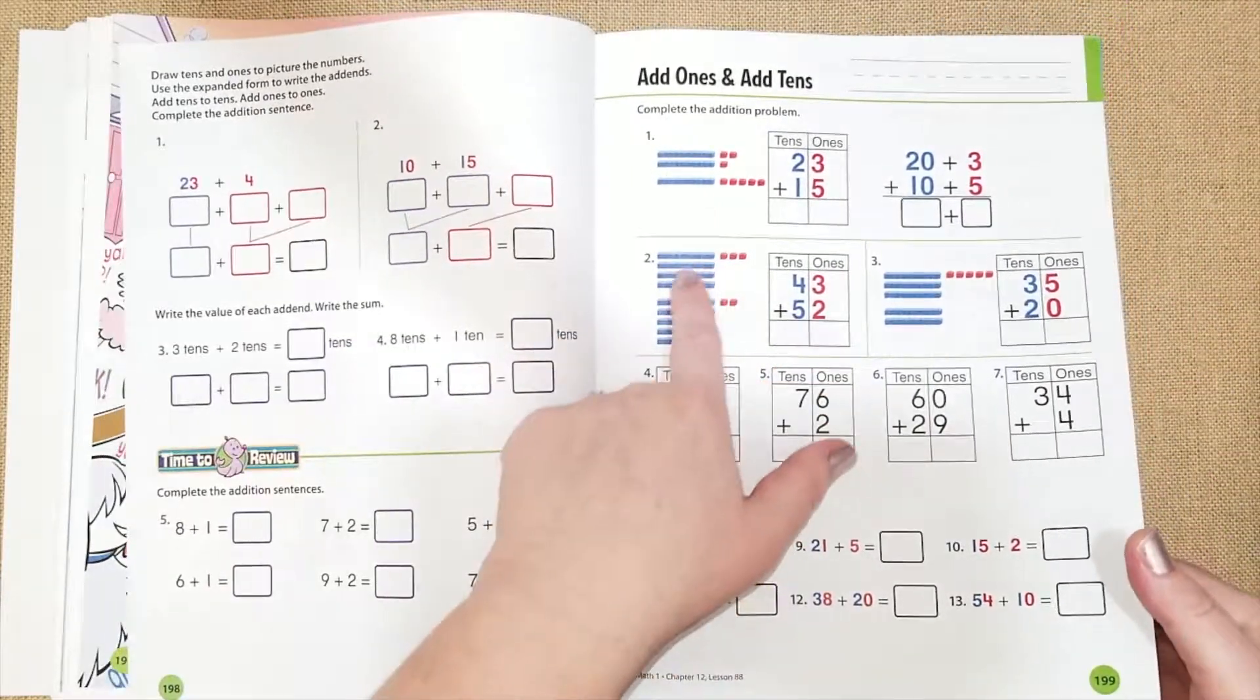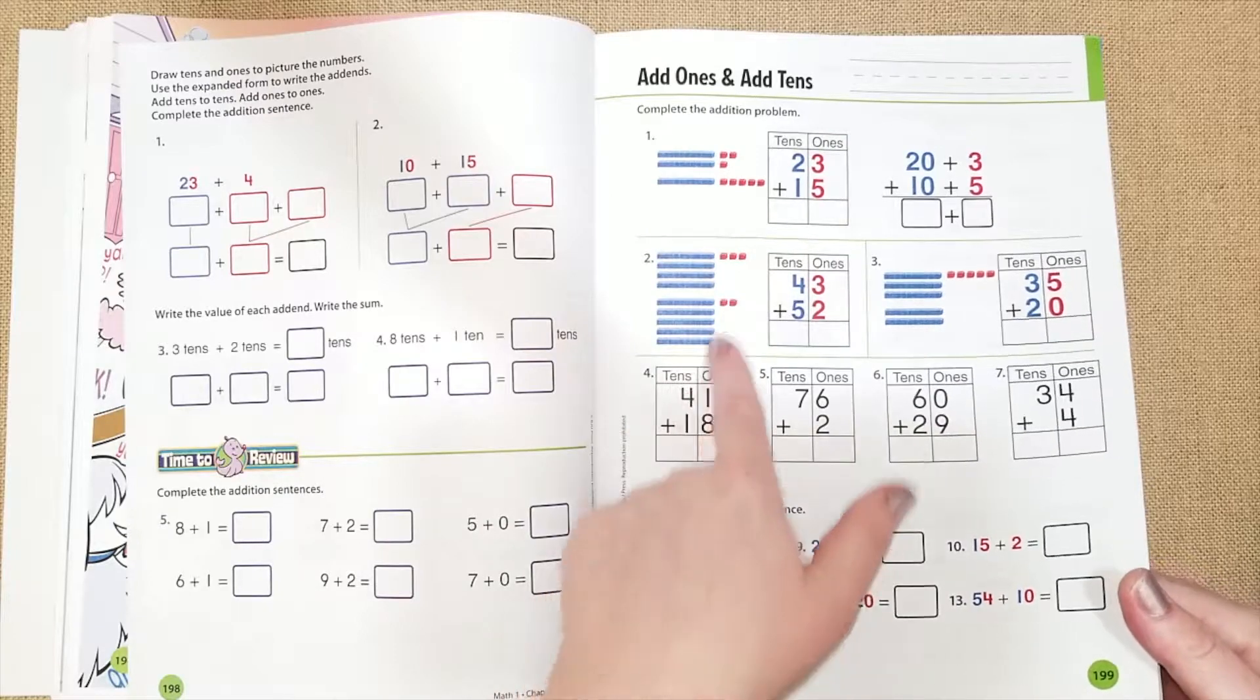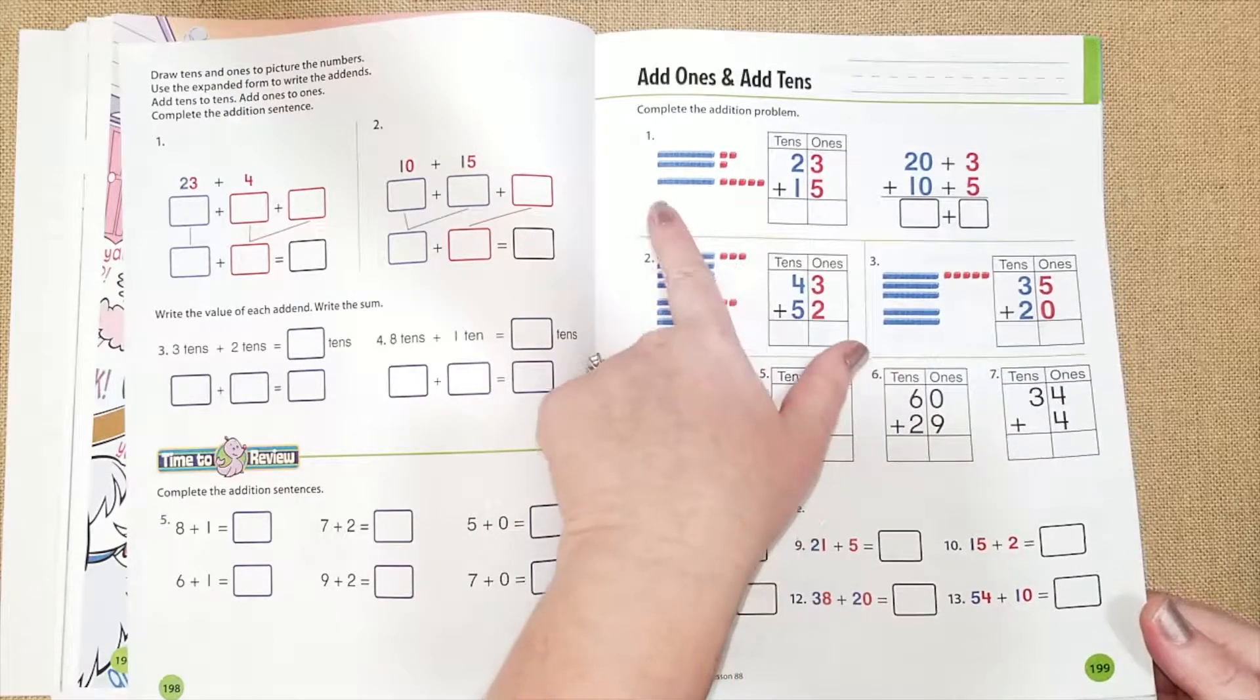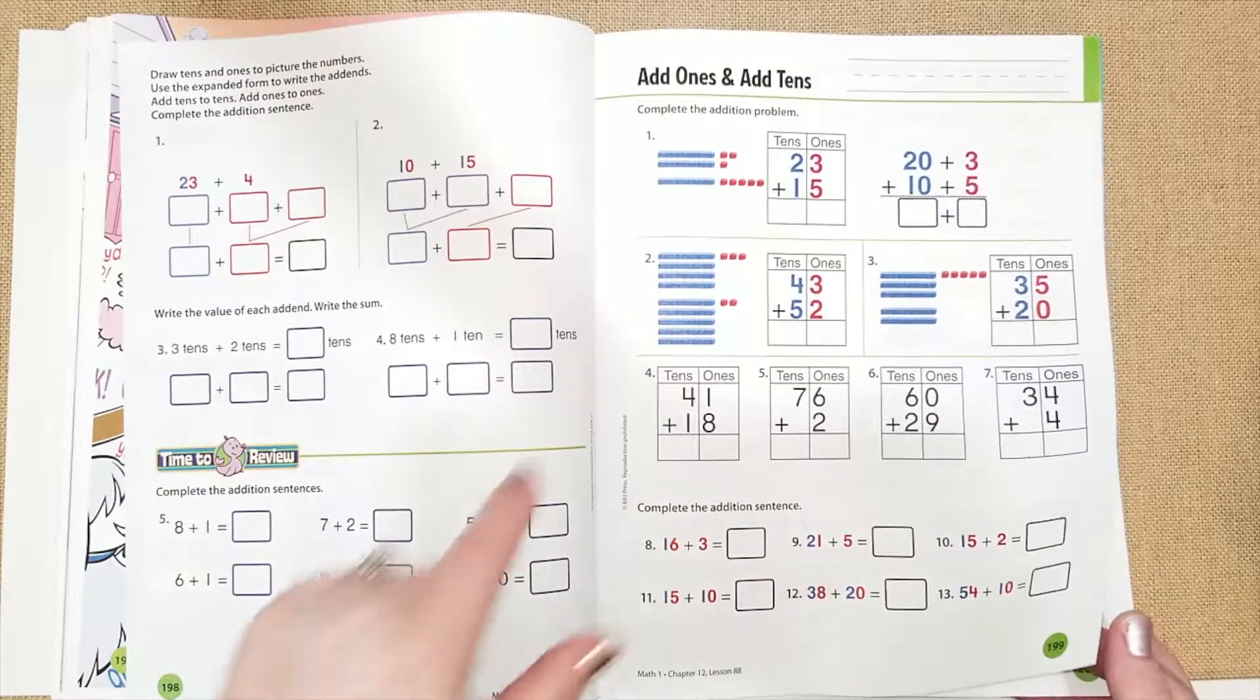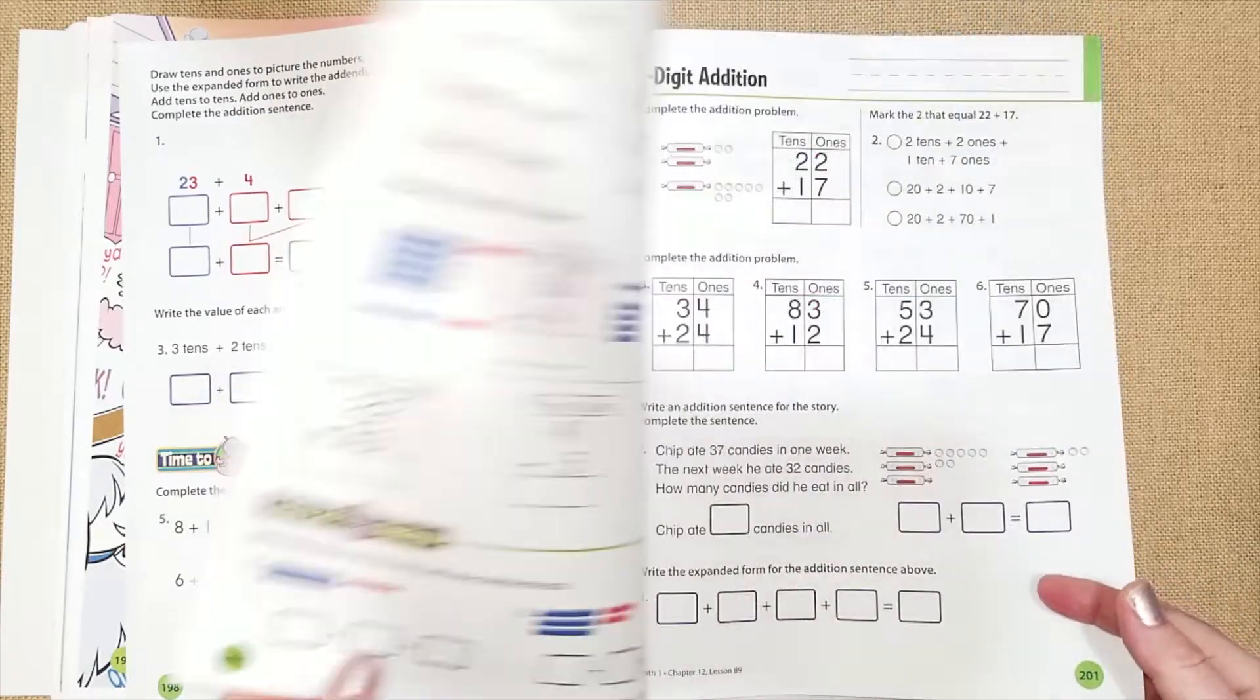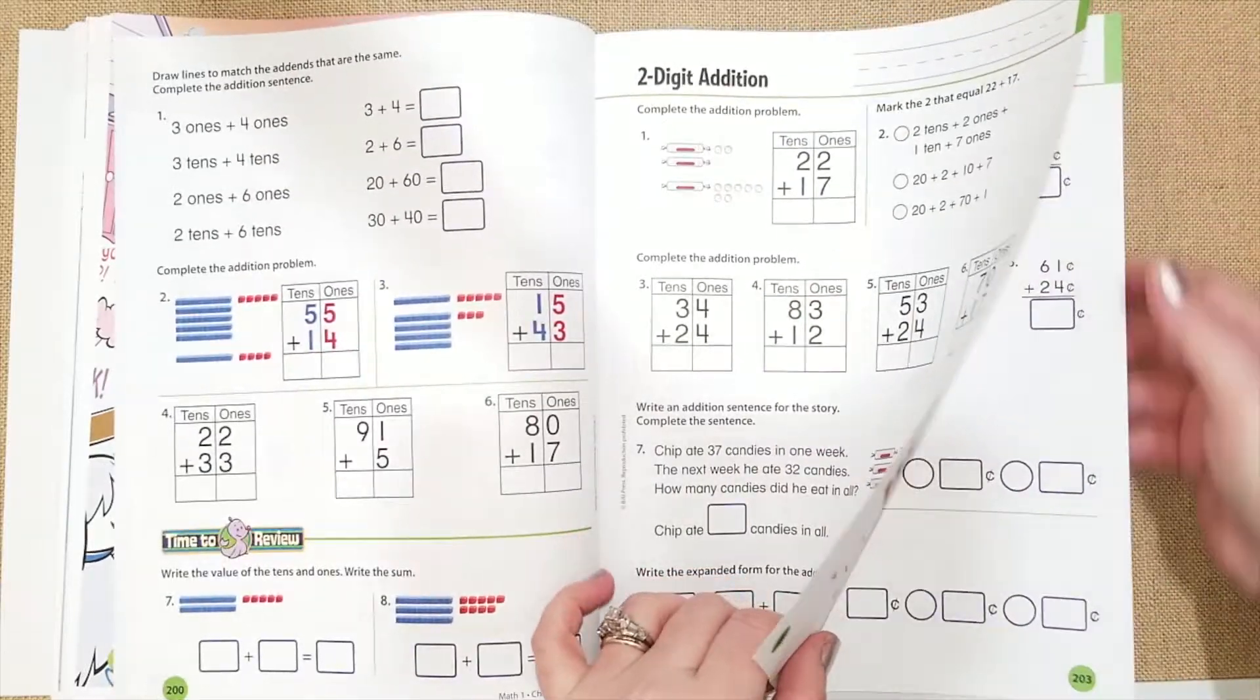So as you can see, they're going to have the tens and they're going to put the two in the tens column, the threes in the ones column, the tens in the ones column, and then the fives in the ones column, or the tens in the tens column, and the fives in the ones column. So they're going to be doing two-digit addition.